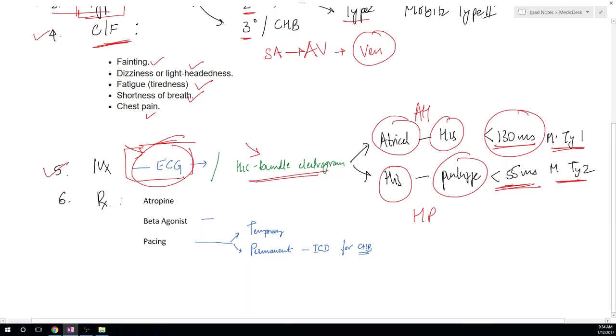For management purposes, atropine can be given, beta agonist can be given. Both of them will reduce the heart block, so AV conduction will increase and the symptoms will improve.